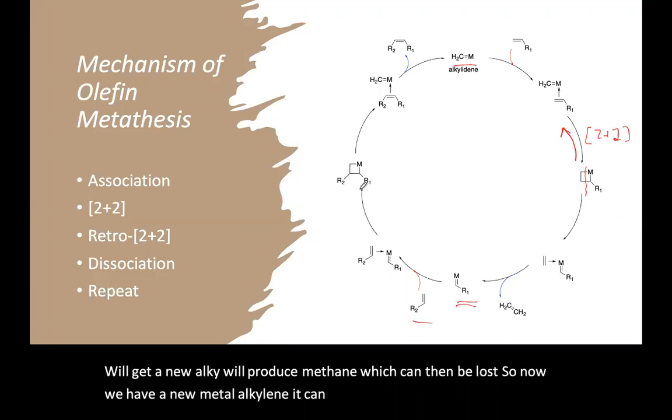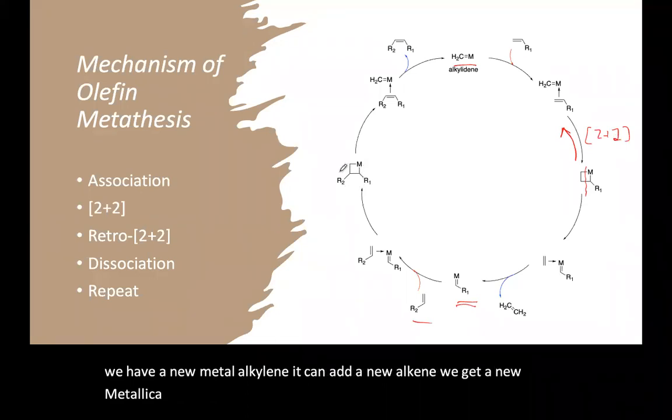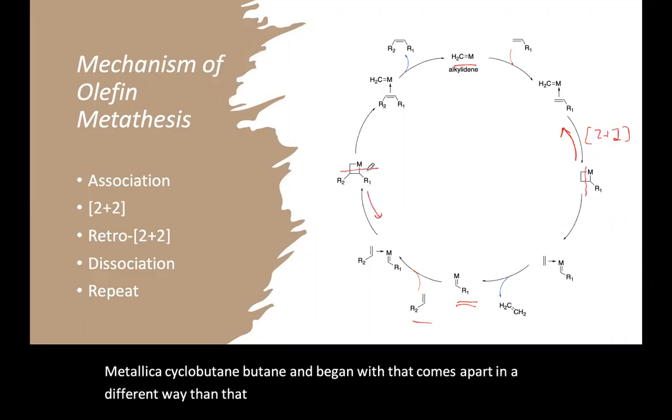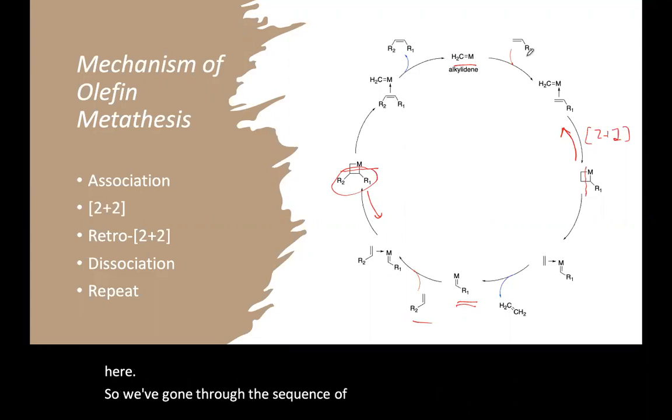So now we have a new metal alkylidene. It can add a new alkene. We get a new metallocyclobutane. And again, if that comes apart in a different way than it came together, it's going to form a new alkene here.